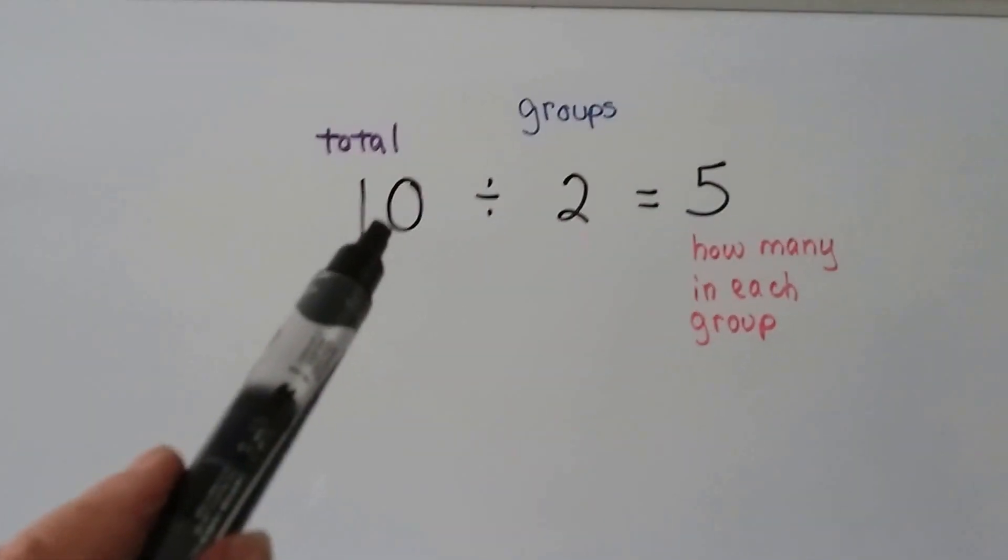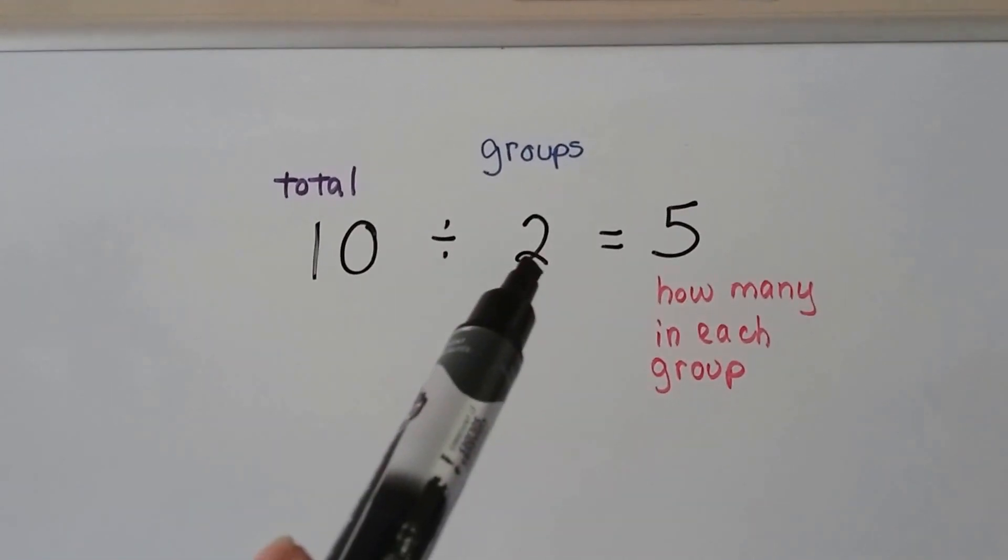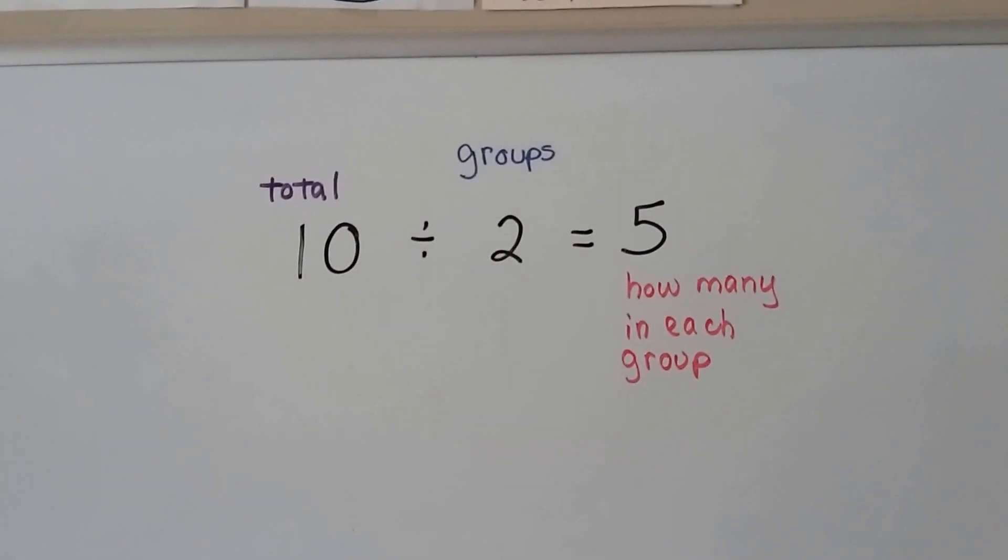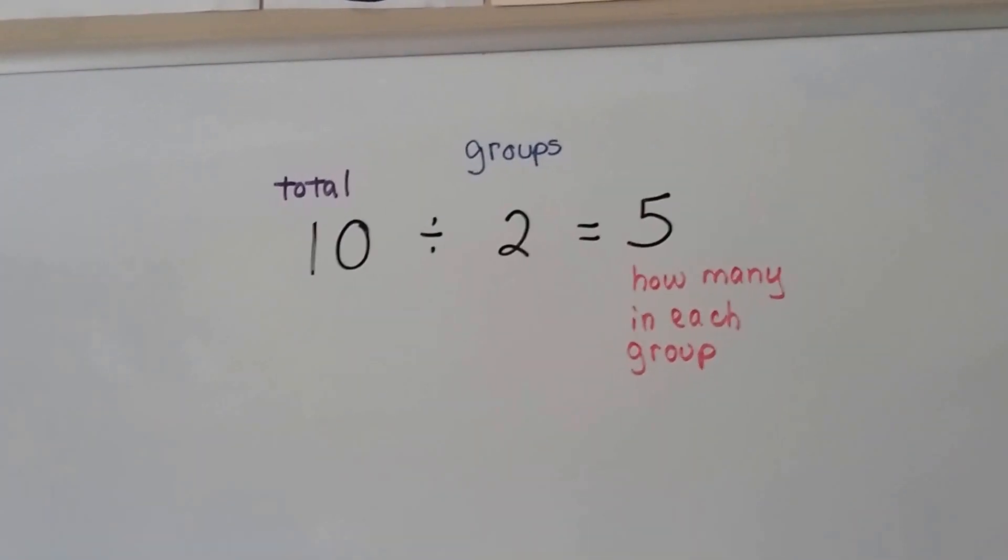This first number, that's the total of how many you have. That's the number of groups that we're going to break it into, and that's how many are going to be in each group. Ten divided by two equals five.